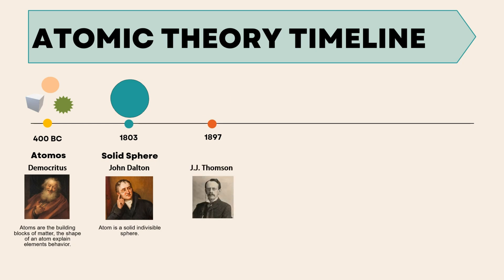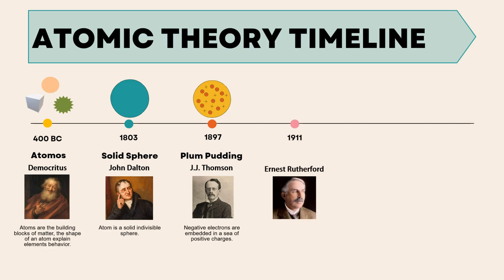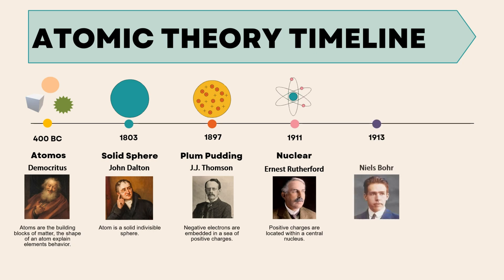Moving forward to 1897, J.J. Thompson presented the plum pudding model, suggesting that negative electrons are embedded in a sea of positive charges. In 1911, Ernest Rutherford proposed the nuclear model, asserting that positive charges are concentrated within a central nucleus. Niels Bohr in 1913 introduced the planetary model, describing electrons restricted to circular orbits with different energy levels.